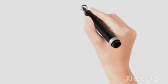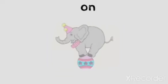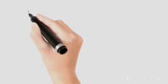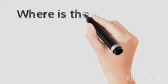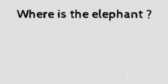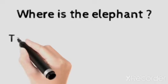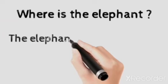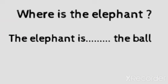Then let's move to the lesson. The first preposition is 'on'. You can see an elephant and a ball. Now you have to build up a relationship between the ball and the elephant. Where is the elephant? The elephant is on the ball.